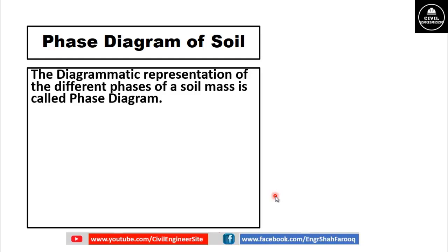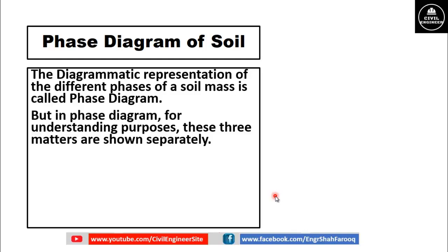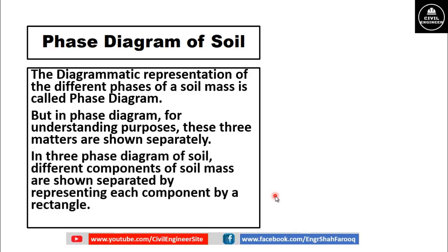As we have discussed, all three constituents are in blended form. But in the phase diagram, for understanding purposes, these three matters are shown separately. In the three-phase diagram of soil, different components of the soil mass — soil solids, air, and water — are shown separated by representing each component by a rectangle.